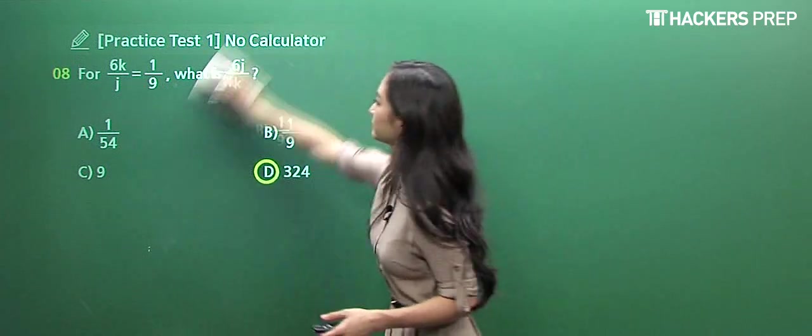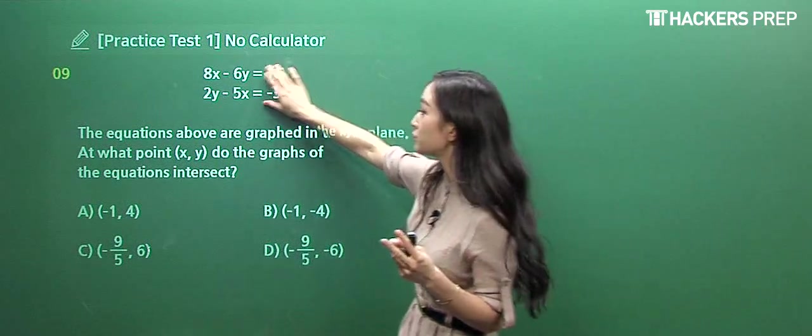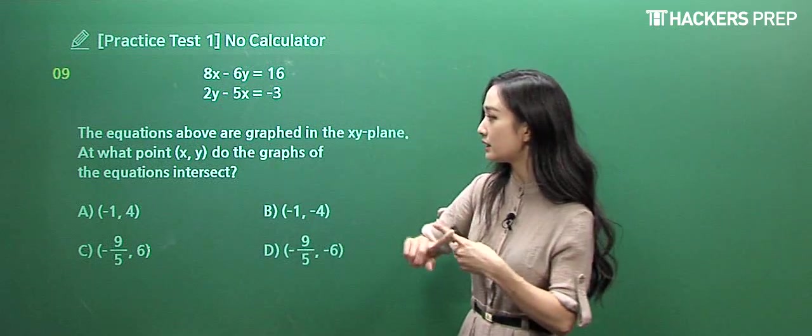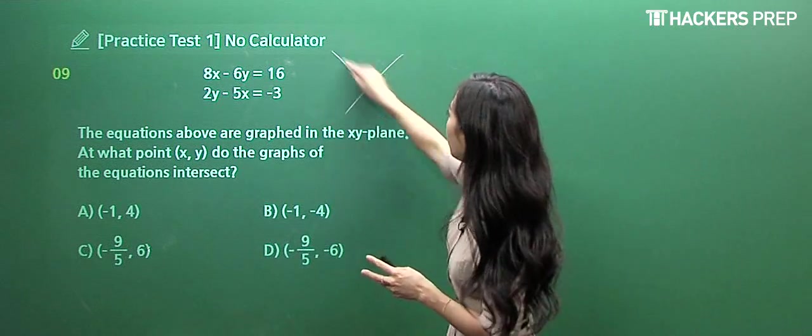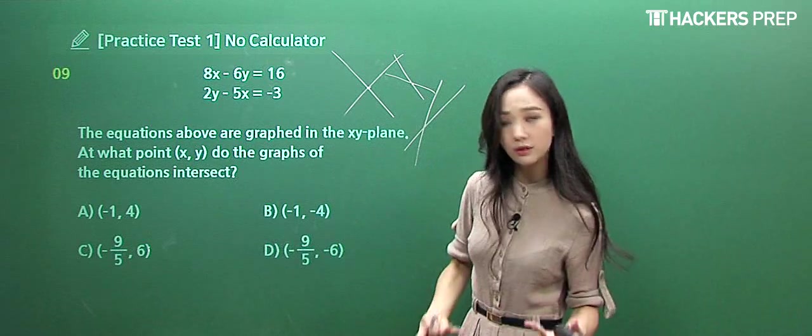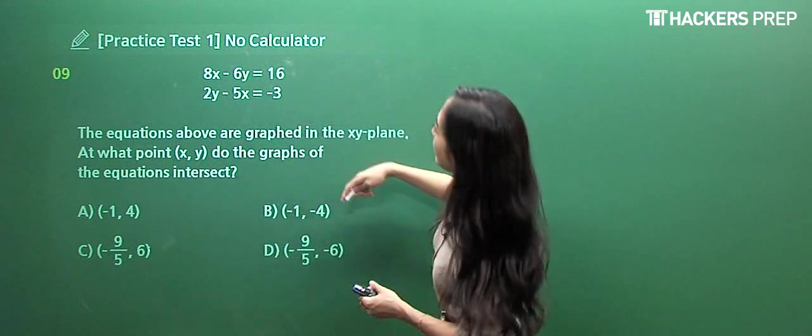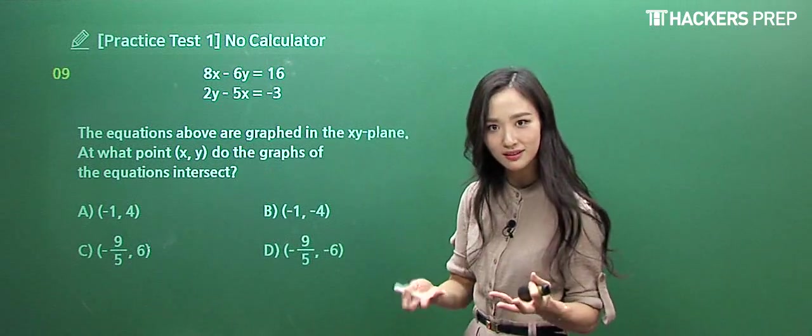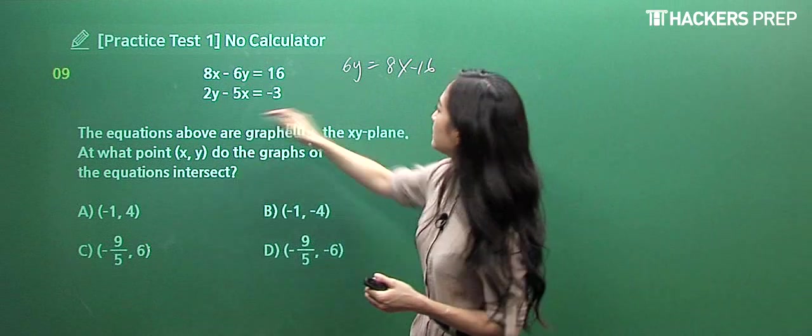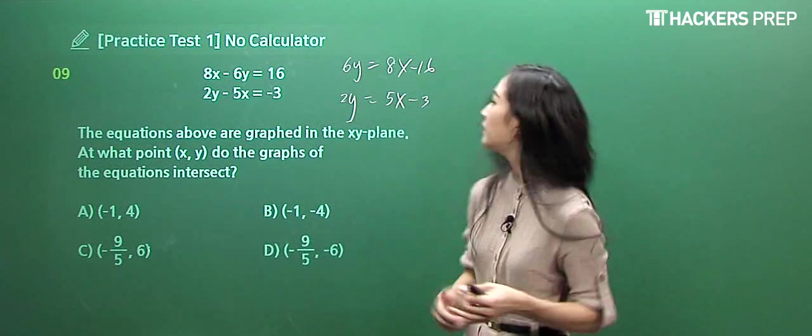Let's move on to number nine. They're presenting two linear equations graphed in the XY plane. At what point do the graphs of the equations intersect? You solve the systems of linear equations. The first equation: 6y = 8x - 16. The second equation: 2y = 5x - 3. I think eliminating the y value by multiplying 3 to the entire second equation will be simpler. You get 6y = 15x - 9.